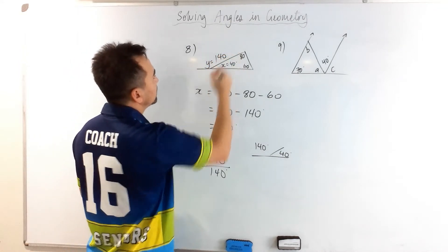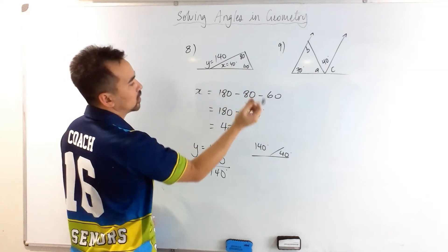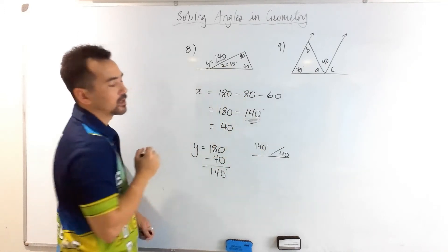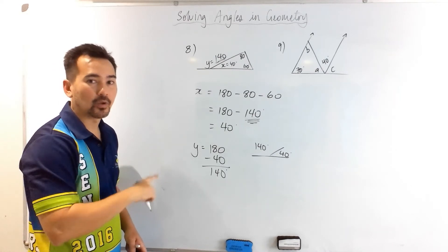Now, isn't that interesting that 80 plus 60 also made 140. On the left we have 140, and that's not a coincidence, that will always be the case.